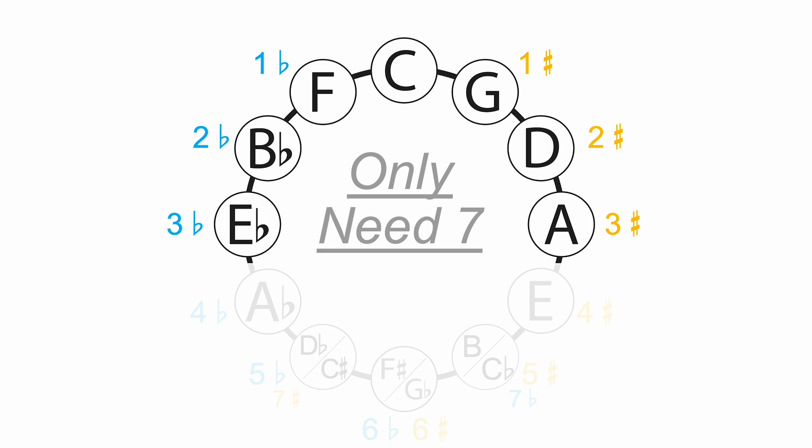What if I told you you really only need seven? You only need seven major keys to quickly and easily understand all major and minor key signatures. And that's what we're going to talk about today — how to quickly and easily get to all of our major and minor keys with really only knowing seven. We're going to show you all of the tips and tricks to understand all of the relationships between your major and minor keys to make this really easy.